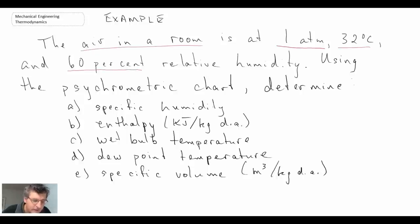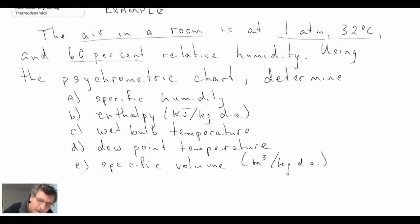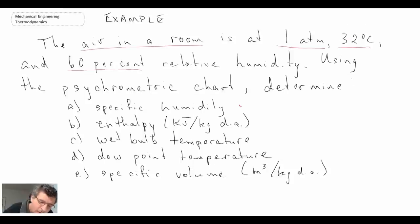And from that they want us to calculate a lot of different things. First of all, they want us to get the specific humidity, so that if you recall is little omega (ω). Enthalpy is h, wet bulb temperature is T_wb, the dew point would be T_dp, and then finally the specific volume of our mixture would be ν.